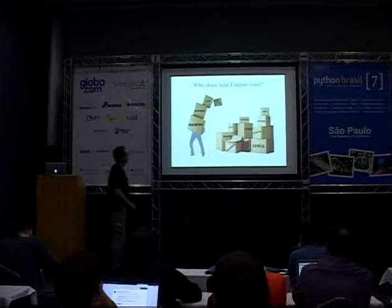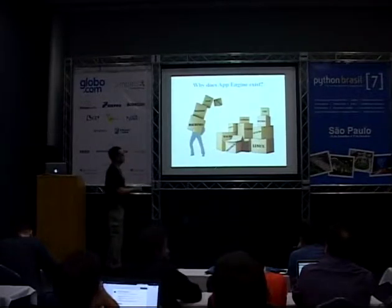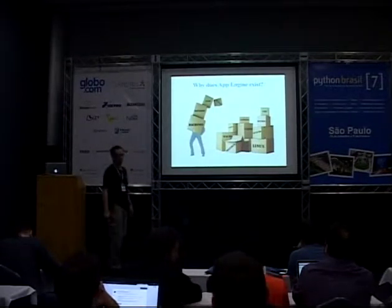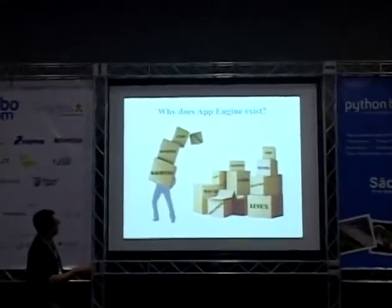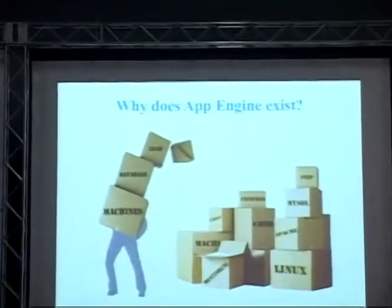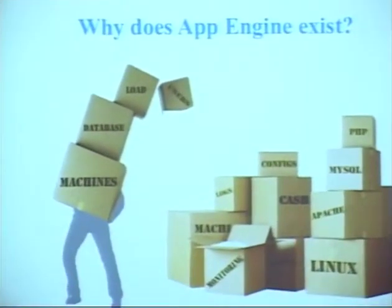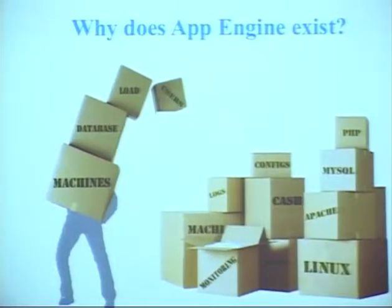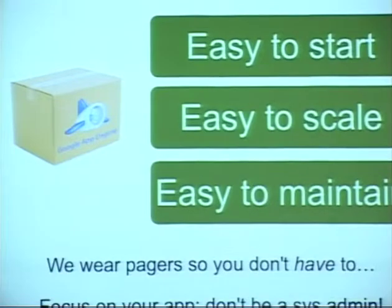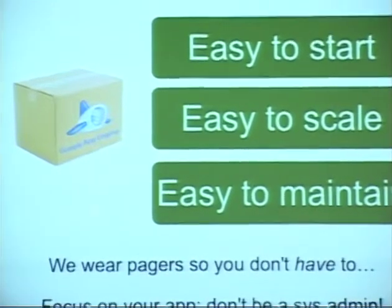Now we can talk about App Engine. I mentioned all these things at the infrastructure level that you have to take care of: licensing, logging, reporting, monitoring — and these are a lot of work. None of these things are your application — they are just tools that your application needs to use in order for it to run. So we want to take all of those things and put them inside one box for you.